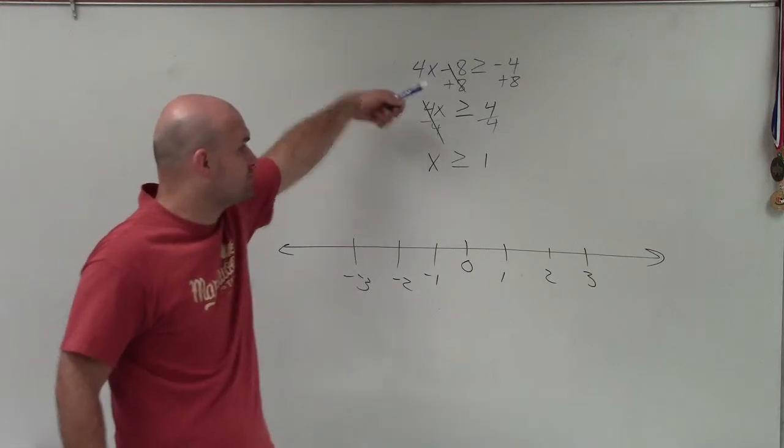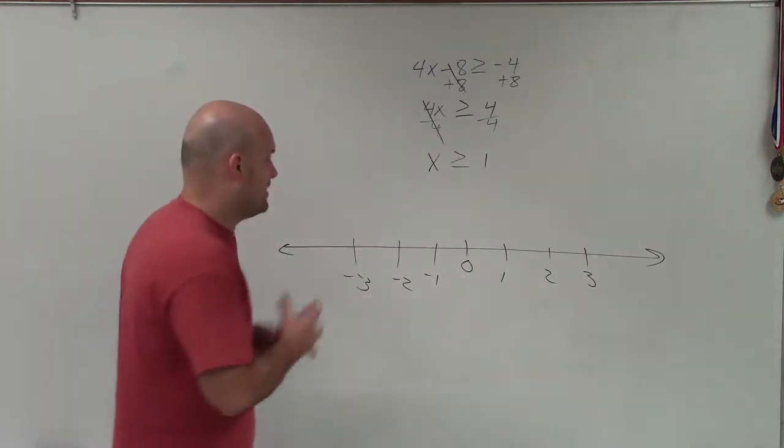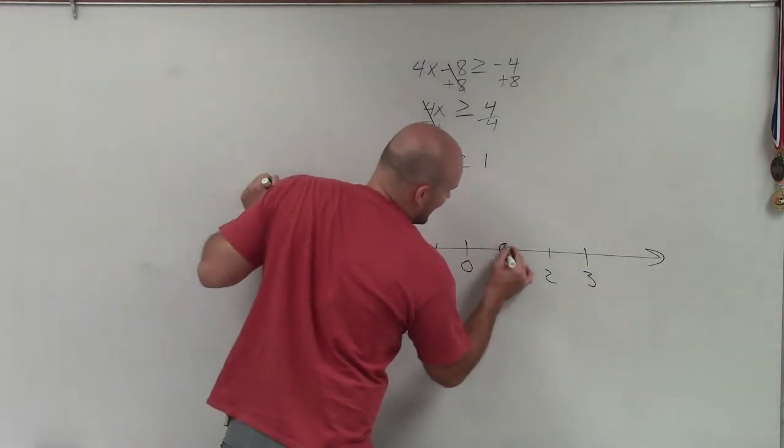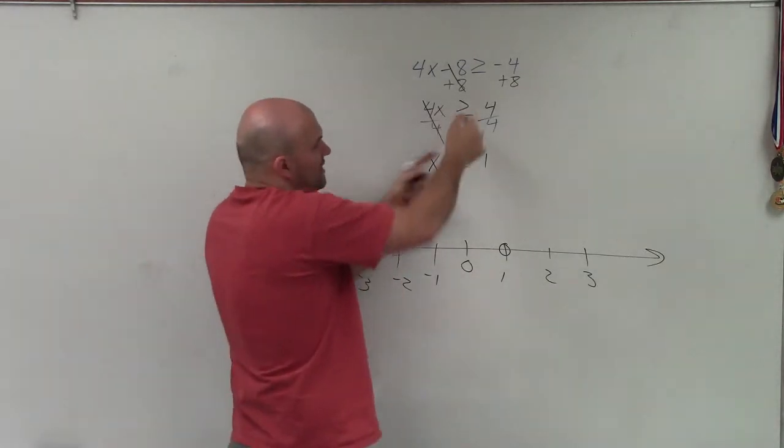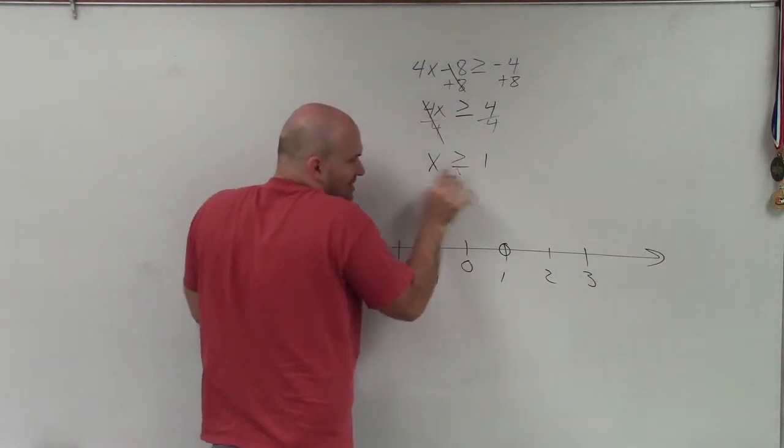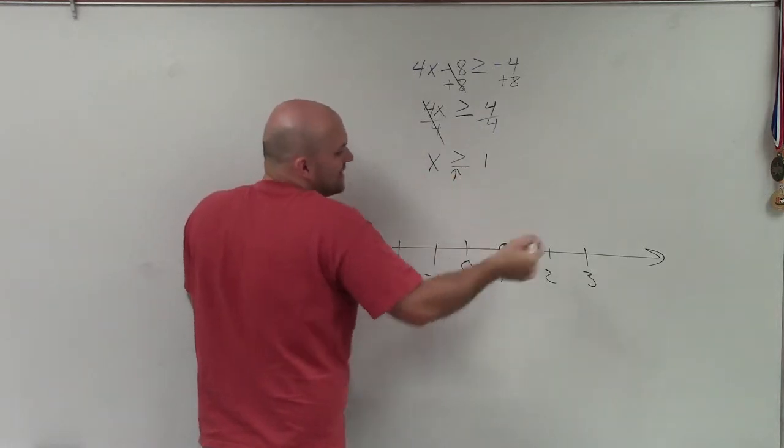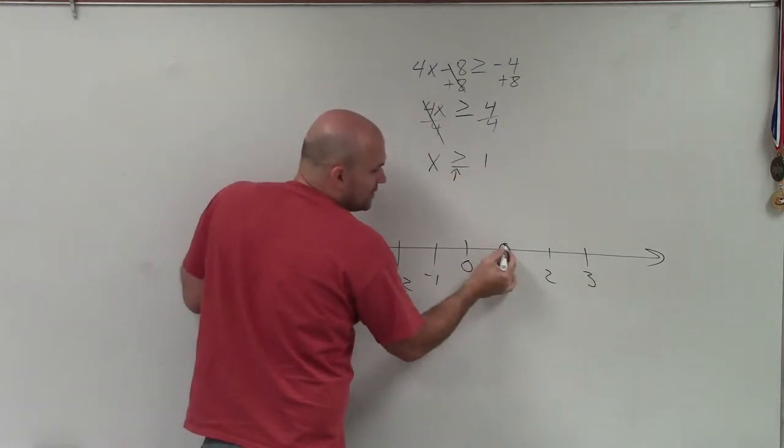This says x is greater than or equal to 1. So I put a dot at the 1. Now, since it says greater than or equal to, this little line means greater than or equal to, and that means 1 is a part of the equation. So I fill it in.